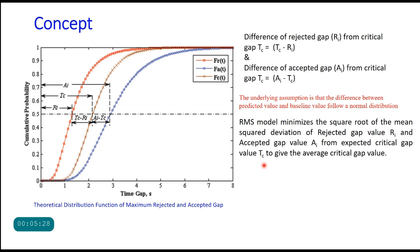The method requires only two sets of data: highest rejected gap and accepted gap for the estimation of critical gap. This method is different from maximum likelihood method in two aspects.